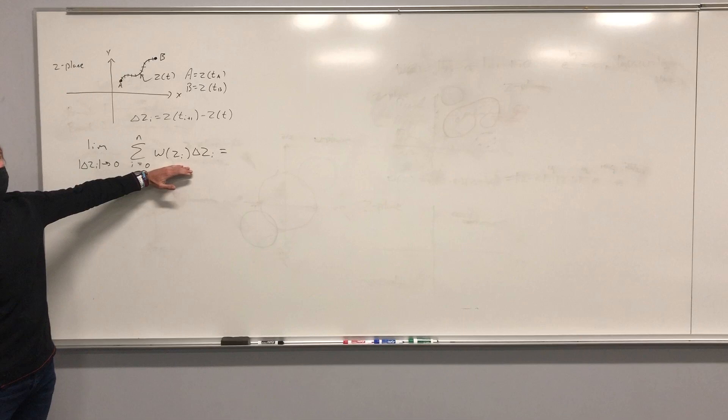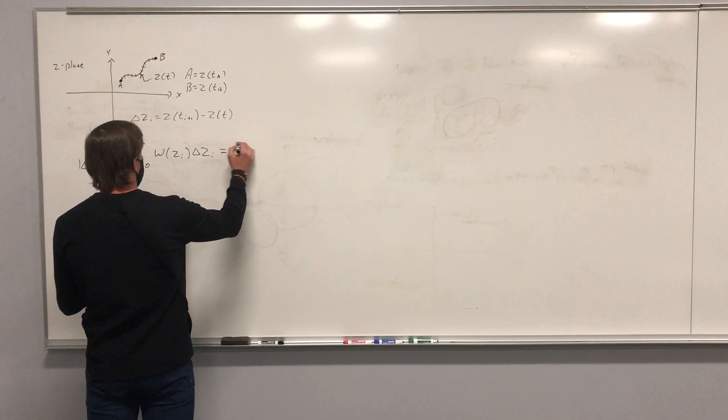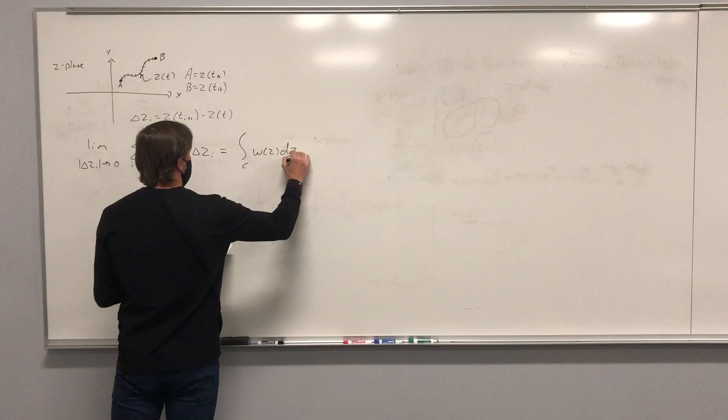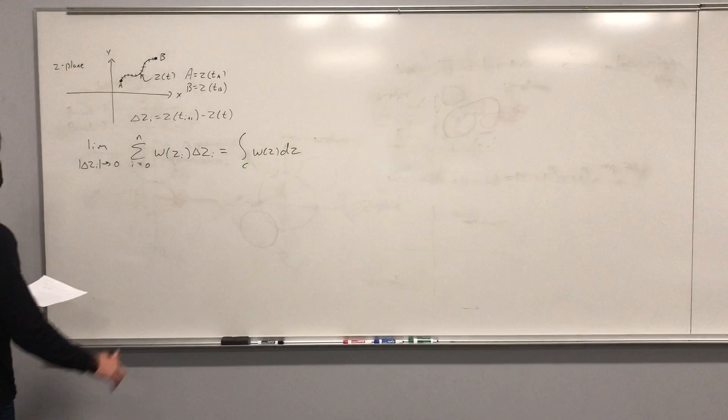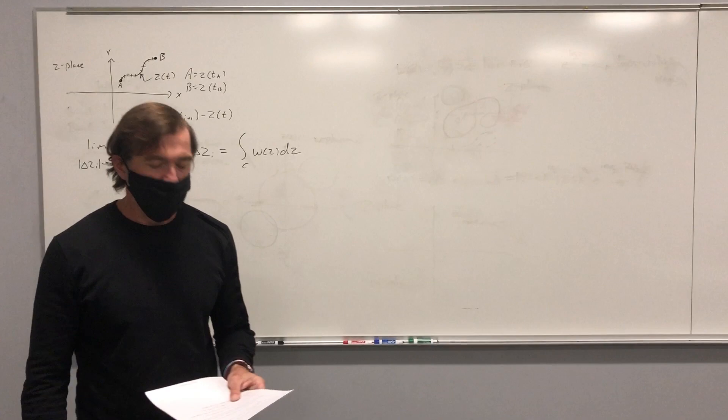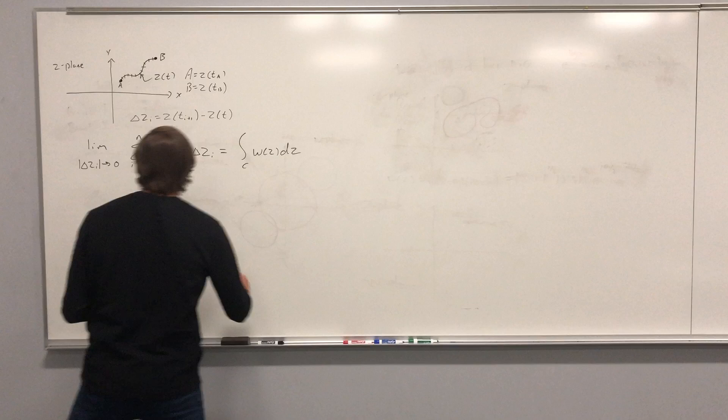Notice this is just the complex plane's interpretation of the Riemann sum — that's it. That's going to define the integral over the contour of W(Z) dZ. As delta Z goes to zero, n goes to infinity.